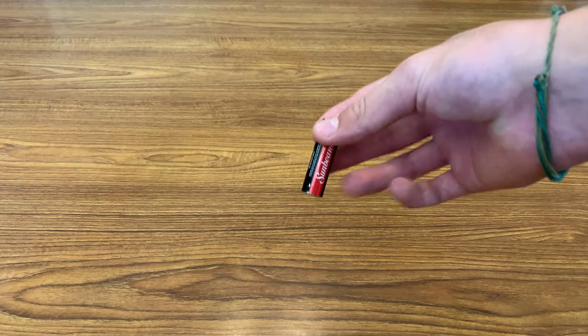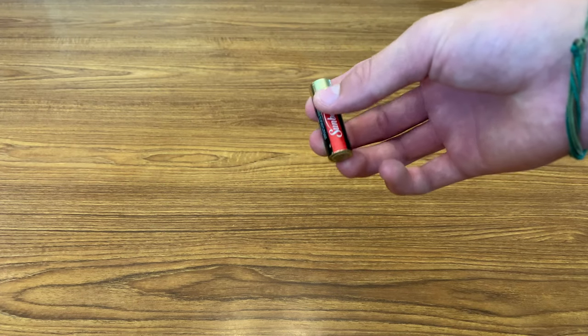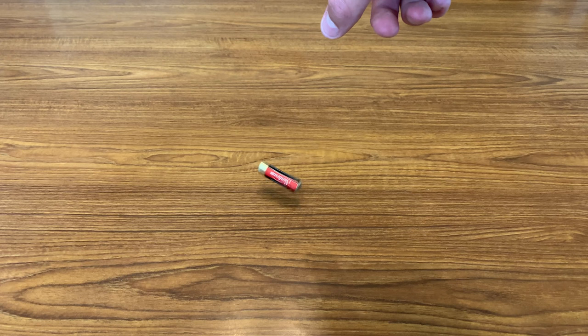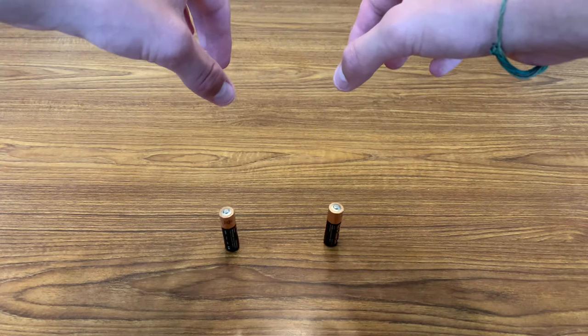And speaking of batteries, there is an easier way to test if a battery still has juice other than trying to use it or tasting it. All you have to do is simply drop the battery with the negative side facing downward. If it is dead, it will bounce like this, but if it's full, it'll bounce much lower.